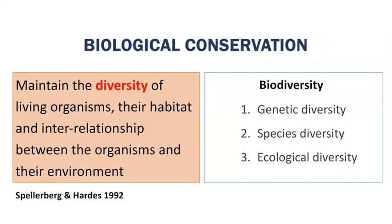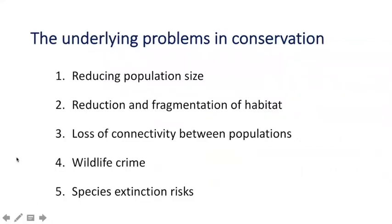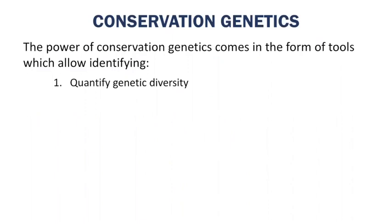When you talk about biological conservation, it's not just about protecting organisms or keeping them alive, but also maintaining their habitat and the interrelationships between different organisms — their ecology. The underlying challenges in conservation include reducing population sizes, shrinking and fragmenting habitat, loss of connectivity between populations and habitat patches, and other pressures like poaching, all of which can lead to extinction of a species due to natural or anthropogenic factors.